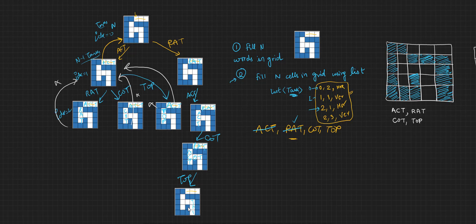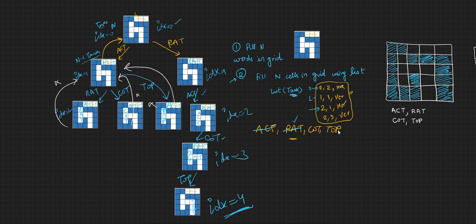Now we are left with the last task: 2,3 vertical. The remaining word is TOP. We go with TOP and fill it in. All tasks are now complete — task index 0, 1, 2, and 3 are all done. When we reach index 4, which does not exist in the list, we declare success. We have found a valid solution and can stop here.